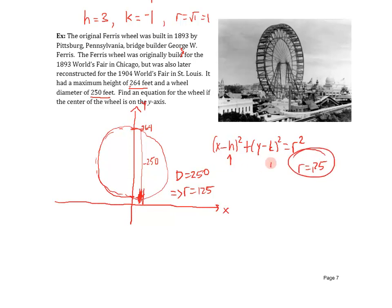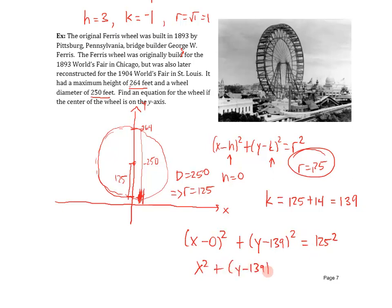But now the question is, what's the h and what's the k? Well, h is easy, h is zero because we are on the y-axis. What is k going to be? What is the center, how high is it? Well, we know since the radius is 125, then you take 125 plus the 14 that it is above the ground at the bottom, and you get 139. Plugging all that in, you end up with (x - 0)² + (y - 139)² = 125². Or, x² + (y - 139)² = 15,625. And there is the equation of the first Ferris wheel. And that is the end of lecture three.